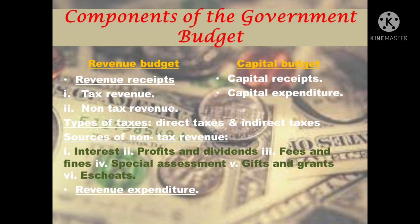Revenue expenditure is expenditure that neither creates any assets nor causes a reduction of liabilities. On the other side is the capital budget. Capital budget contains capital receipts and capital expenditure. Capital receipts are government receipts that either create a liability or reduce assets. Capital receipts include items which are non-repetitive and non-routine in nature. Capital expenditure is expenditure that either creates physical or financial assets or leads to reduction of its liabilities.